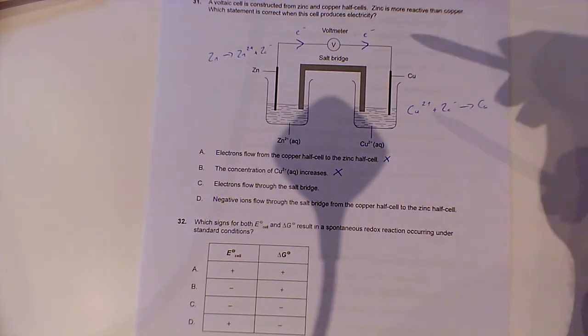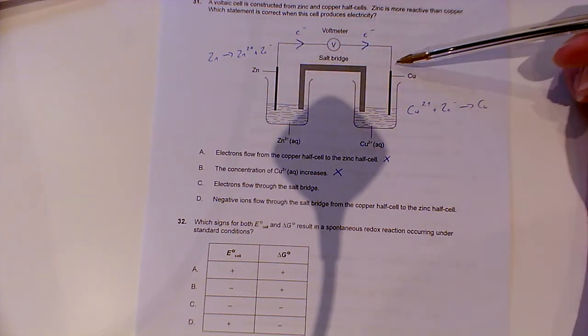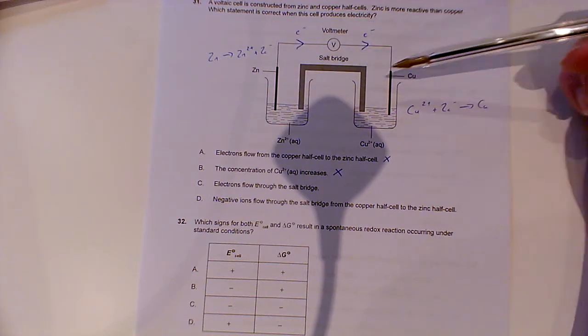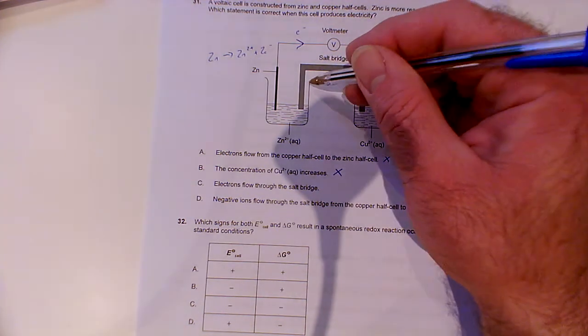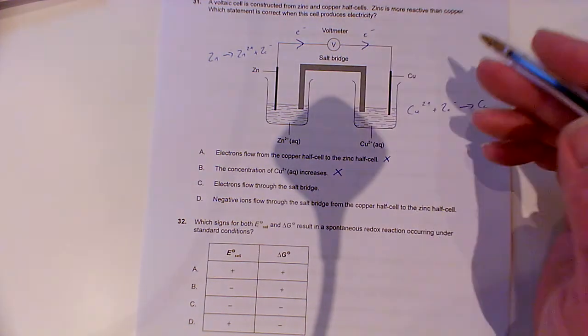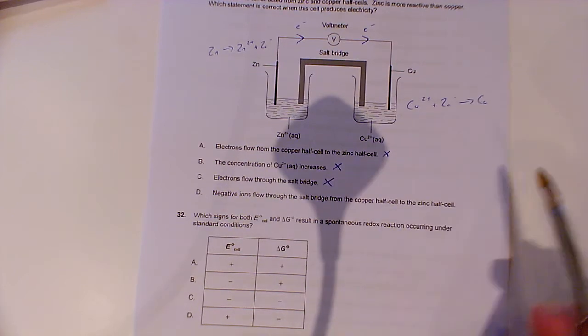Electrons flow through the salt bridge. No, they just flow through the external circuit, through the wires. They can't flow through the piece of filter paper or whatever it is. Often this is like a piece of saturated potassium nitrate solution on filter paper. So that's wrong. Hopefully it must be this last one.